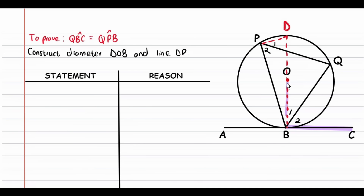Looking at line OB: it goes from the center of the circle to the circumference, so it's a radius. Whenever you have a radius and a tangent, the radius is always perpendicular to the tangent at the point of contact — point B. So OB is perpendicular to tangent BC. Because OB is perpendicular to BC, angle B1 plus angle B2 equals 90 degrees. The reason is that the tangent is perpendicular to the radius.